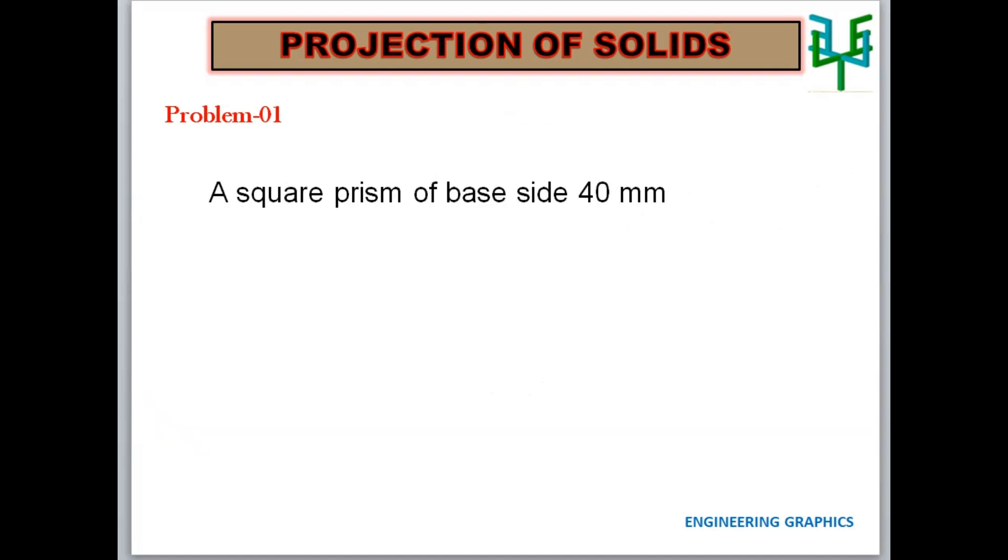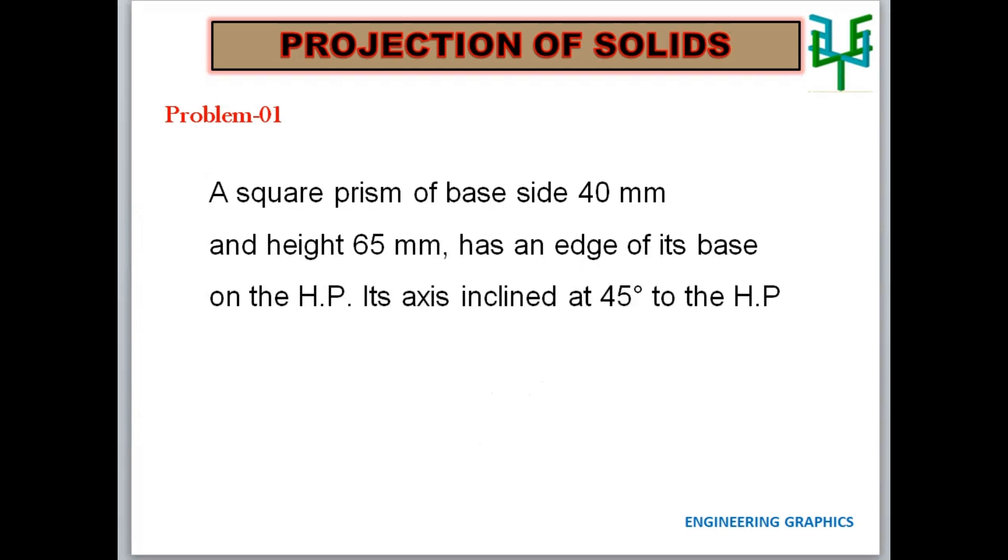A square prism of base side 40 mm and height 65 mm has an edge of its base on the HP. Its axis is inclined at 45 degrees to HP and parallel to VP. Draw its projections.